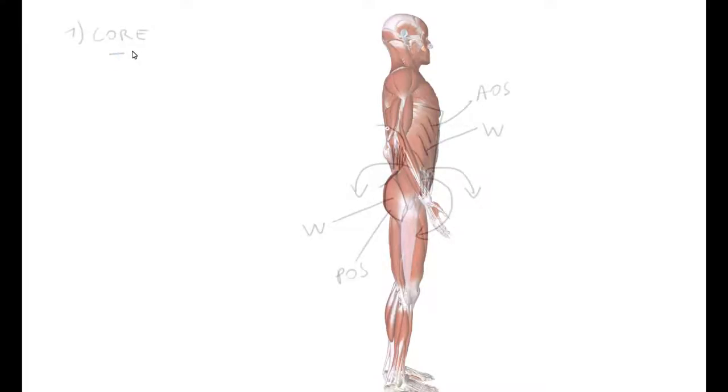What are core muscles? From the front and from the side, that's anterior lateral aspect, transversus abdominis. From the back, that's posterior aspect, multifidus. From the top, superior aspect, diaphragm. And from below, that's inferior aspect, pelvic floor.